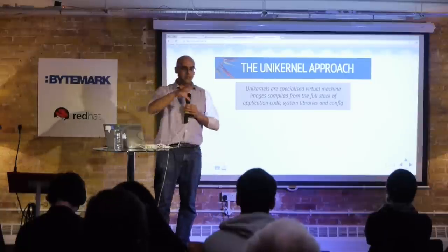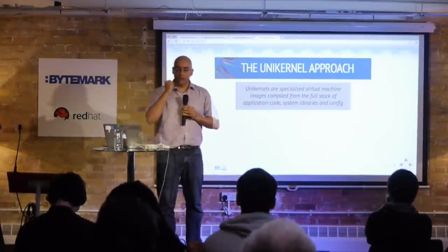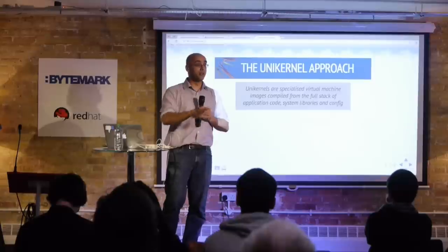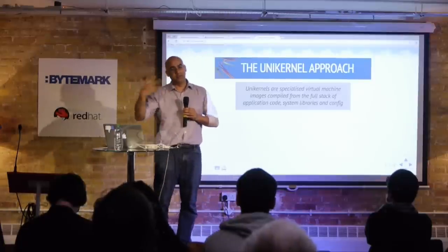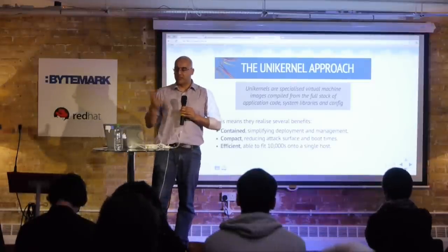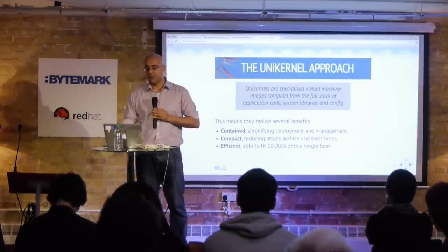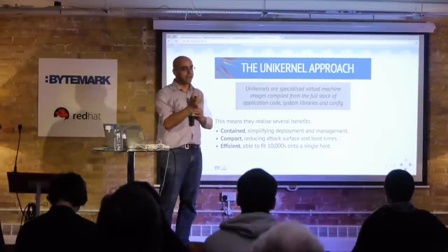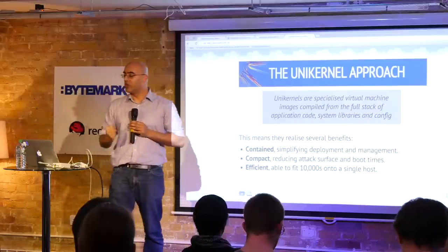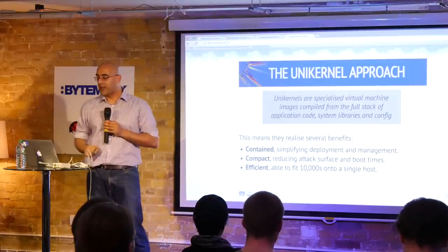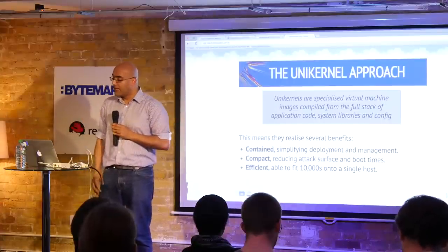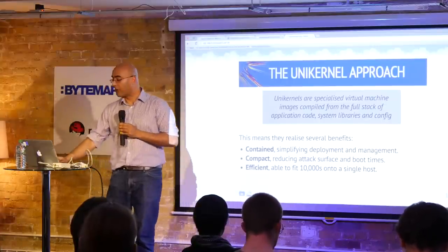Unikernels are basically specialized virtual machine images that include the full stack: application code, system libraries, and configuration. The configuration lets you do a lot of the specialization by stripping away stuff you just don't use. The benefits of Mirage specifically are: contained — everything you need for the deployment is in that final output binary, depending only on a very lightweight hypervisor; compact — which reduces the attack surface we have to secure; and highly efficient — it just does less than a normal operating system.